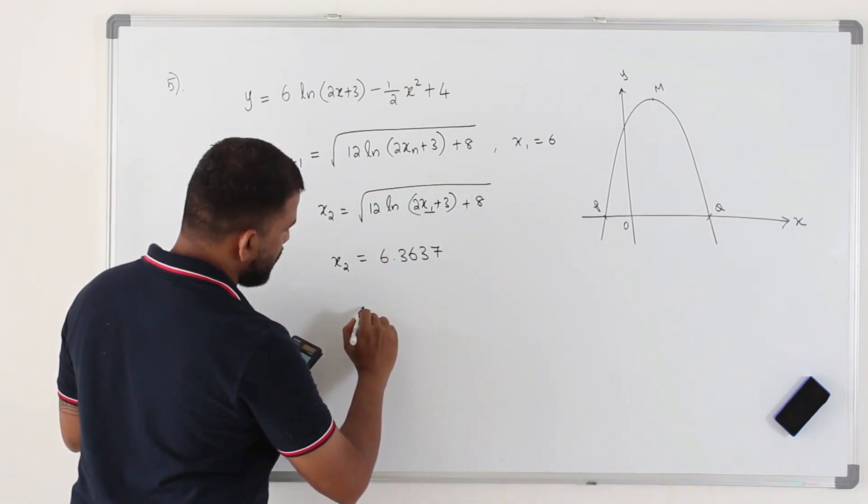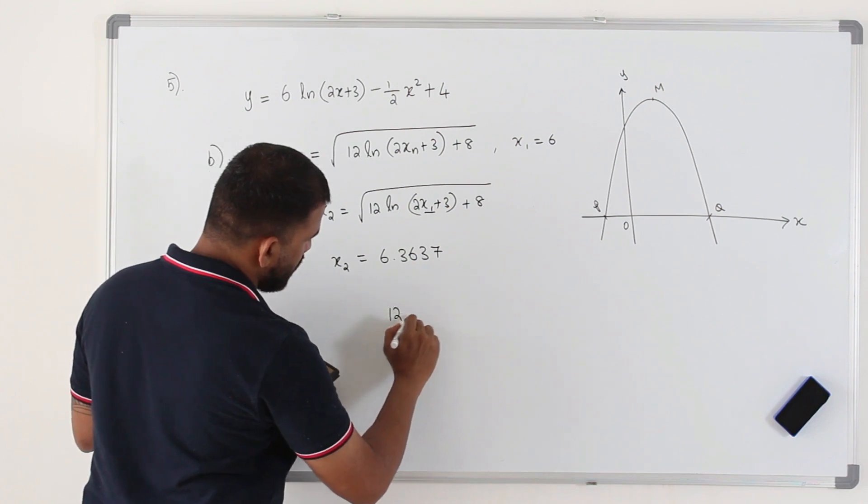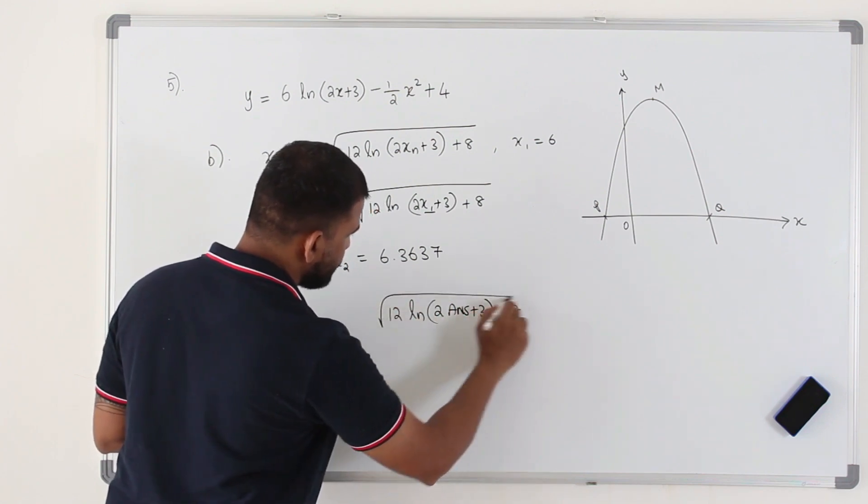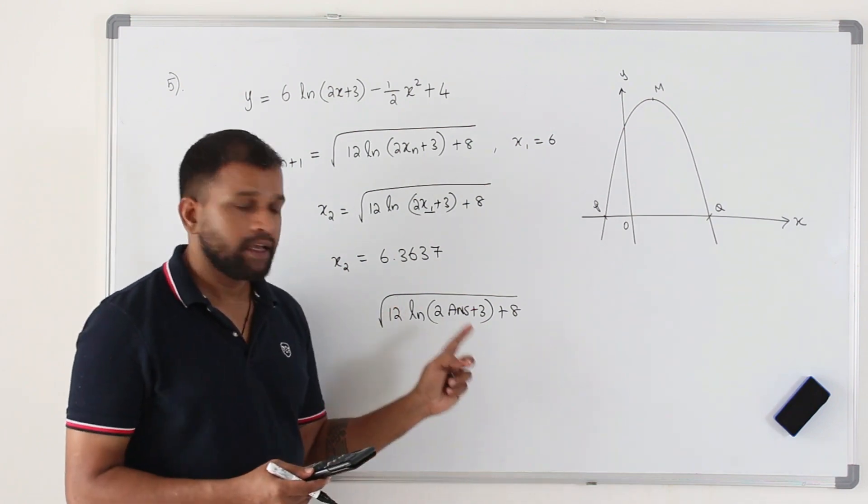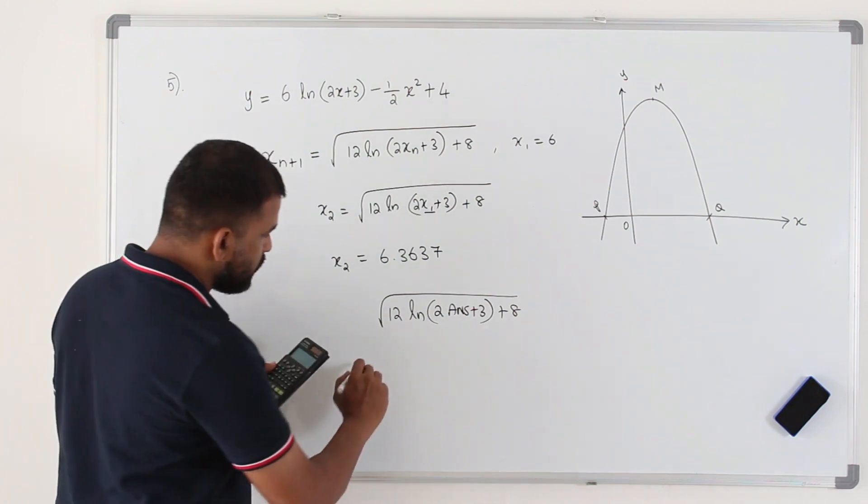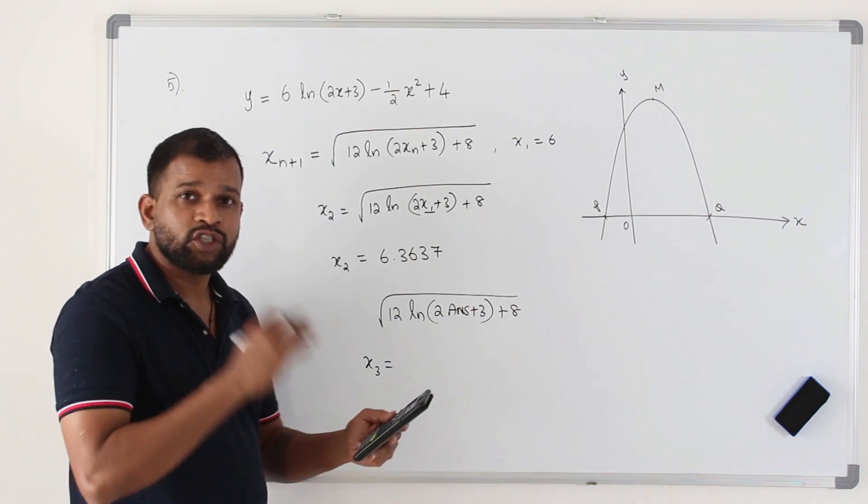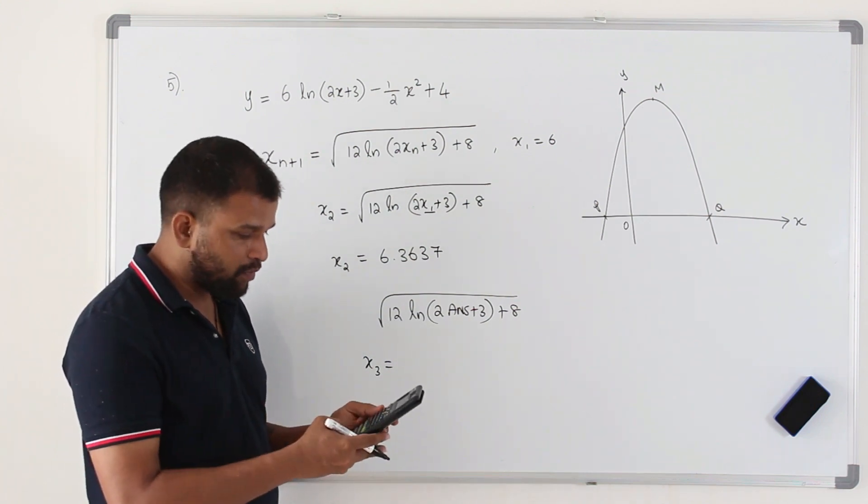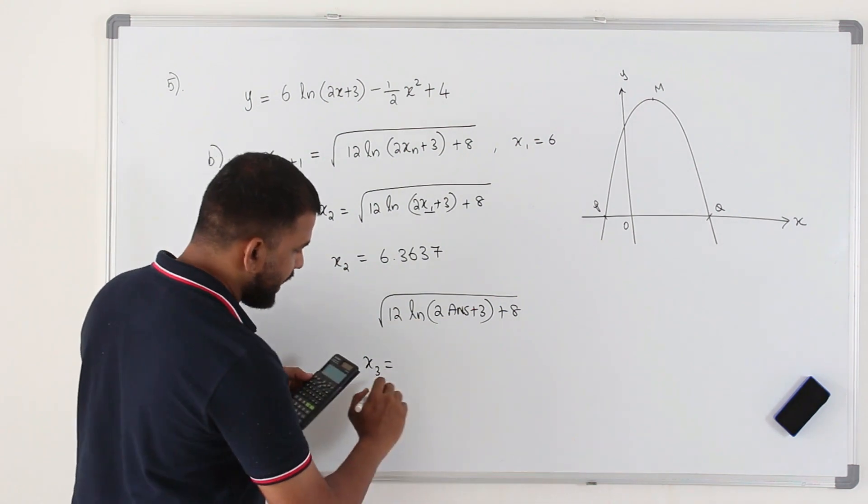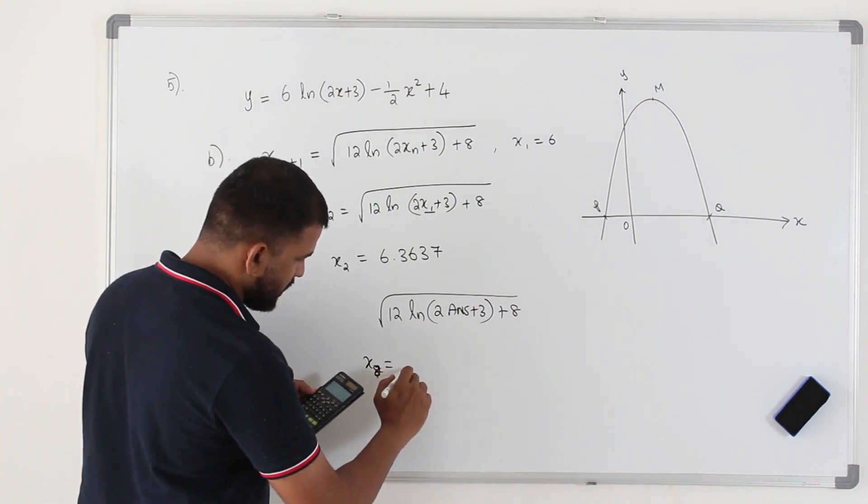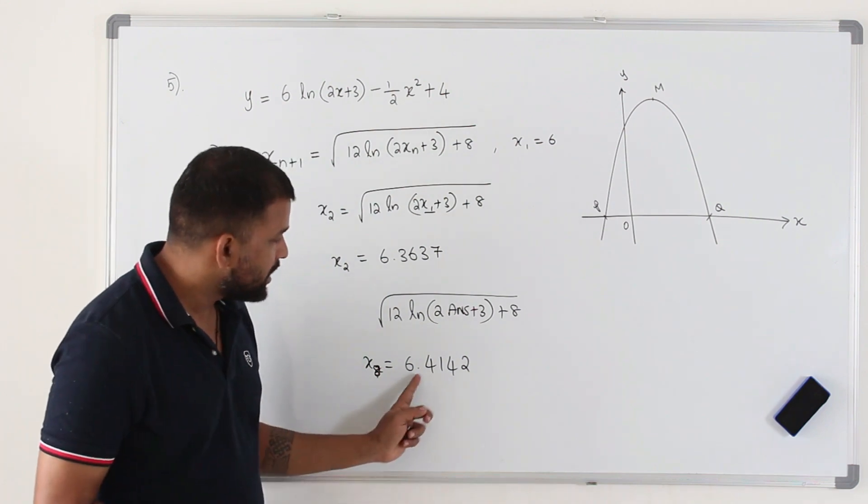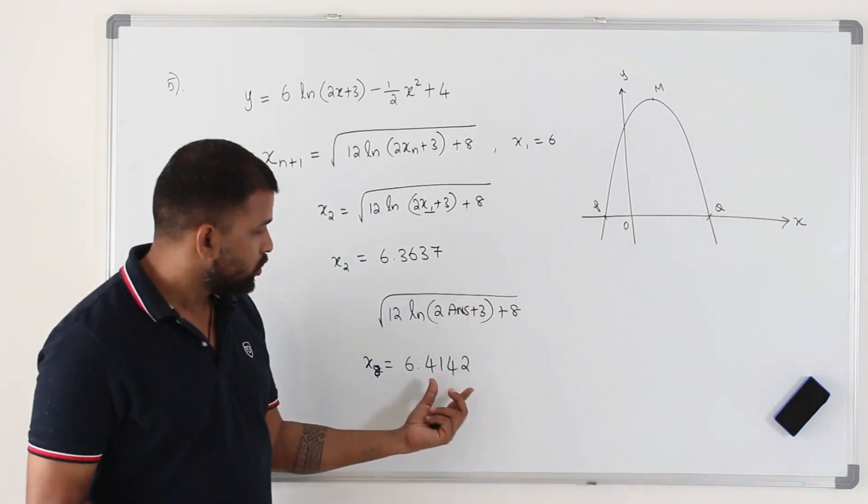Delete this and press answer. So I will have square root of 12 ln(2 answer plus 3) plus 8. So when I press equal, the calculator will take the previous answer and plug it in here. So when I press equal, I get the value of x3. And I just need to keep on pressing equal sign. That's all. I need to keep on counting by looking at the decimal places. I need to check how it changes. When I go x7 and x8, I get 6.4142. That keeps on repeating. So that's the x-coordinate of point Q to 4 decimal places.